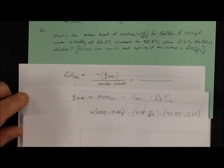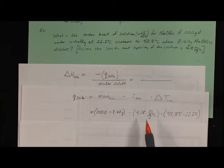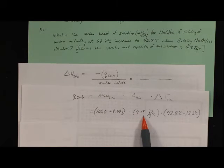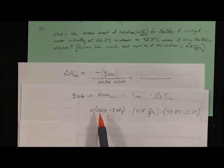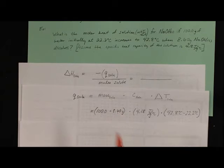So plugging those numbers in, I've got my change in temperature, final temp minus initial temp. The specific heat capacity of the solution, which is essentially just what we're using is water. And here for our mass, again, is the 100 grams of water plus the 8.6 grams of solute, the sodium hydroxide that we dissolved.